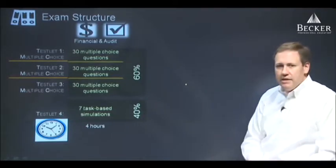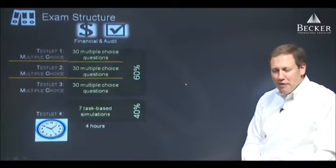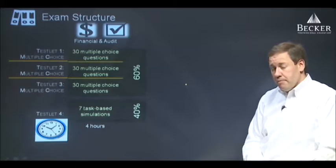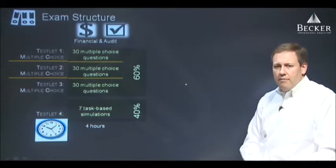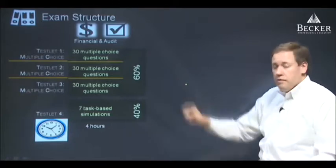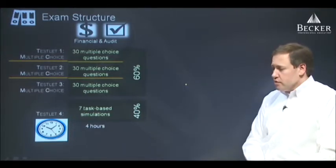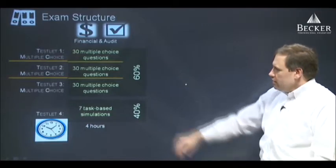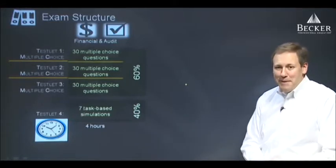That's followed by seven task-based simulations, which are really seven medium-length problems, usually involving a student answering a series of questions or perhaps answering a question that has multiple parts, or sometimes both. Sixty percent of their score currently comes from the multiple choice, and that's part of why multiple choice receives more emphasis in our course. The remaining 40 percent comes from the simulations. It's also worth noting that financial and audit are each four hours in length. The clock starts with question one, testlet one, and either they successfully reach the end or the time runs out — either way, that's when their test is over.